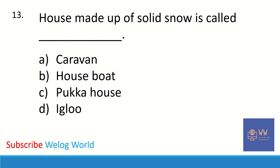Next question: a house made up of solid snow is called dash. Options are caravan, house boat, pukka house, or igloo. The correct answer is igloo — houses which are made up of solid snow are called igloo.